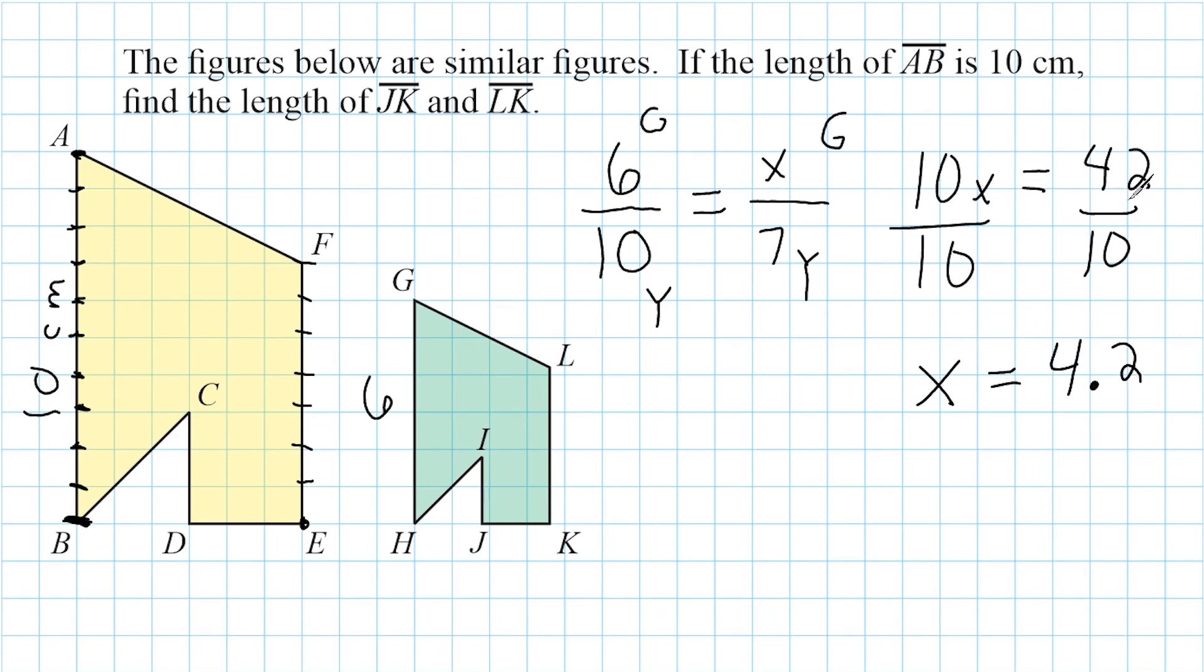Now, if we wanted to express this as a fractional value, then X would be equal to 4 and 1 fifth. Now we can see that this answer makes sense because if we go to line segment LK right here and we start at the bottom, we can see from here to here is 1 and then 2 and 3 and then 4. And we have a distance that goes a little bit beyond 4. So 4.2 would make sense in this case.